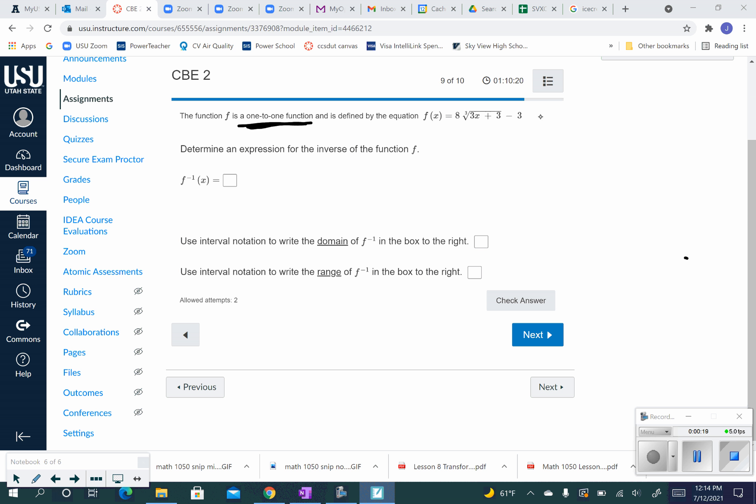So just remember our steps. The first thing is replace the f of x with a y. So 8 cubed root of 3x plus 3 minus 3. Now next step, step number two, is to switch the x and the y. So x is equal to 8 cubed root of 3y plus 3 minus 3.